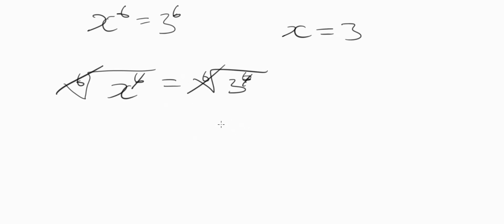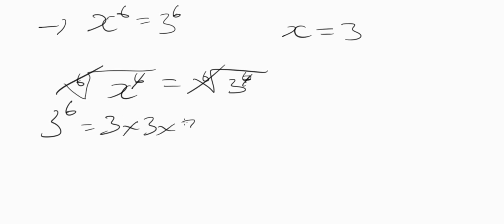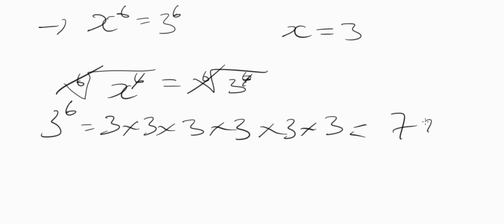So when you plug in x equals 3, you will get back 3 to the power of 6. And 3 to the power of 6 means 3 times 3 times 3 times 3 times 3 times 3, which gives you 729.